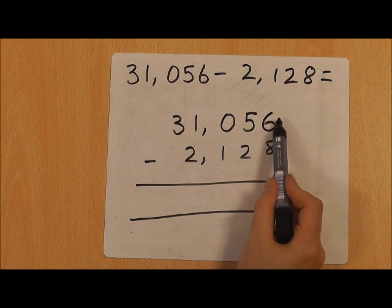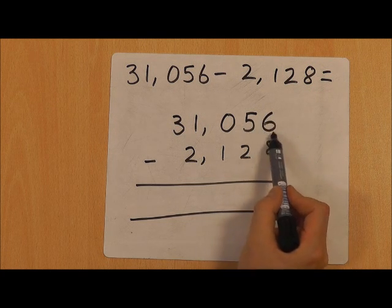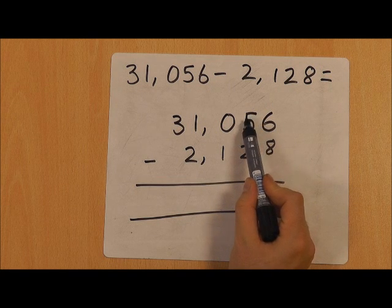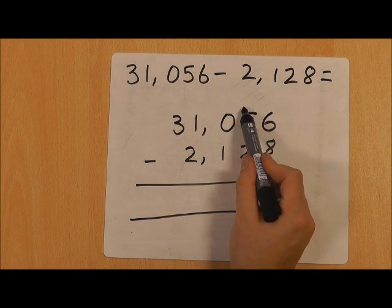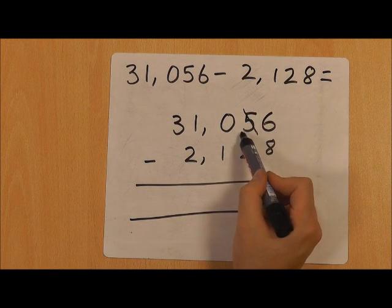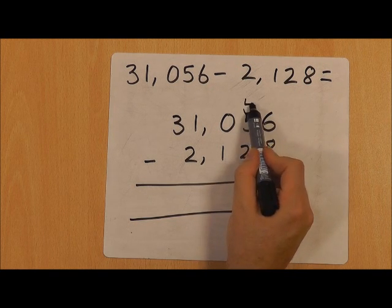What we need to do is always try and make sure that this number on top is bigger than this number on the bottom. So we are going to go over here and we're going to exchange. We're going to borrow from this column, so this 5 we're going to take one from, which will make that 4.